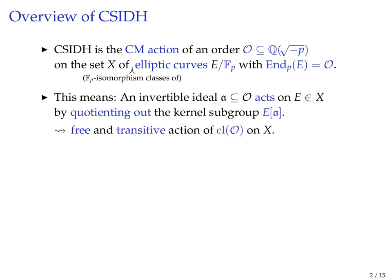Computationally, how do we compute this action? The elements of the class group are represented by invertible ideals, and the action on a certain curve E is given by intersecting all the kernels of endomorphisms contained in this ideal and quotienting that out. By general elliptic curve isogeny theory, every finite subgroup is the kernel of an isogeny. This gives you an isogeny to a different curve—that's the output of your group action.